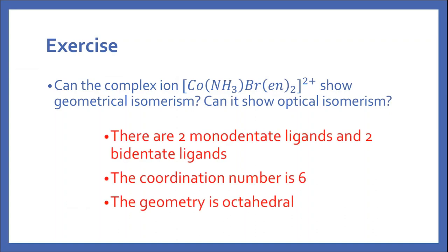When we look at this particular complex ion, it has cobalt as the metal central ion. It has two monodentate ligands: amine and bromo. It has two bidentate ligands - ethylenediamine is a bidentate ligand. We have two groups here. When we have ligands like this, the total coordination number for the metal ion is six.